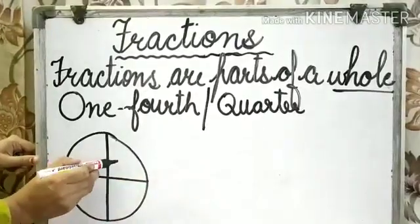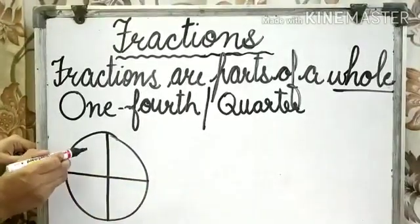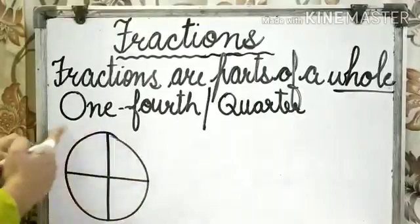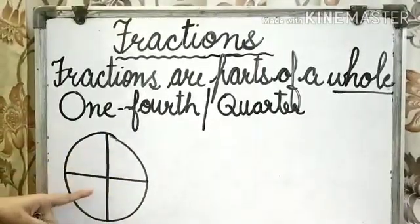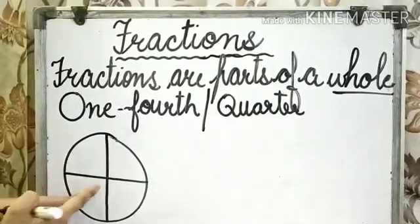See how many parts are there? One, two, three, four. When a whole is divided into four equal parts, each part is known as one fourth.